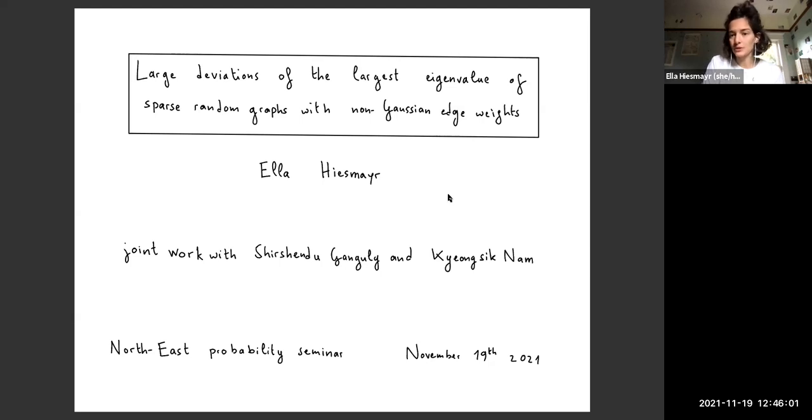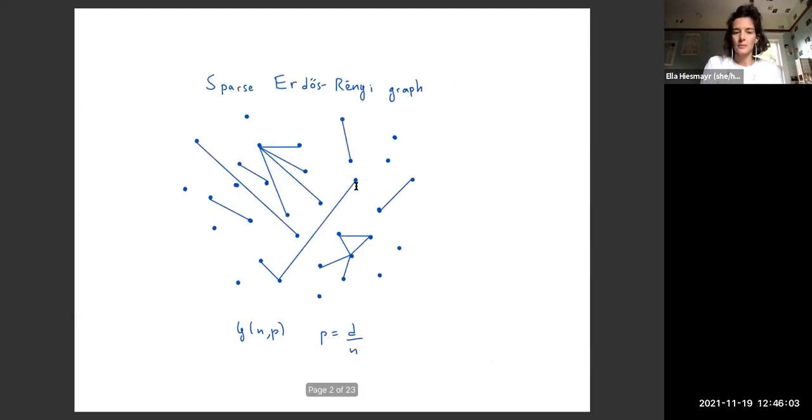I'll start by introducing our model. We start off with a sparse Erdős-Rényi graph. The sparsity we consider is d over n, where d is a constant. This regime is interesting because real-life networks are often sparse in that way. In that case, the average degree is a constant as well.